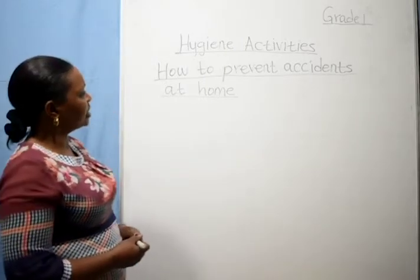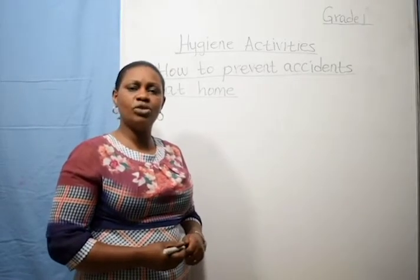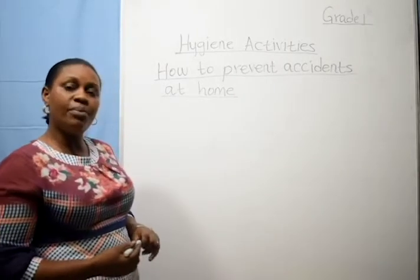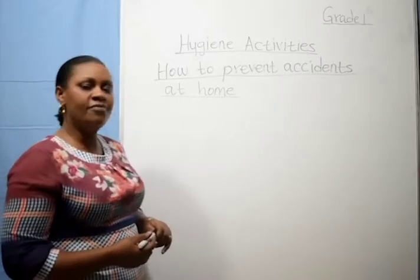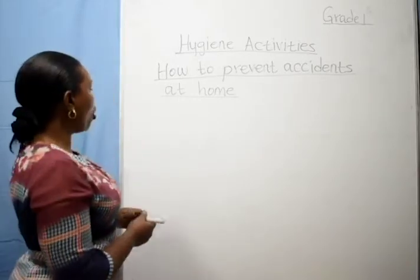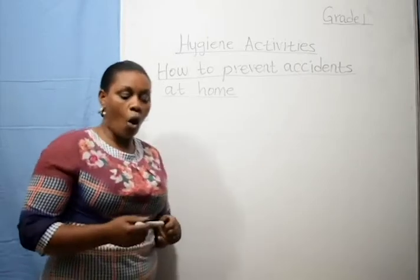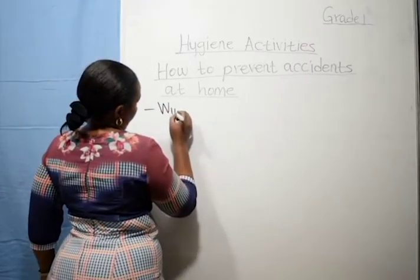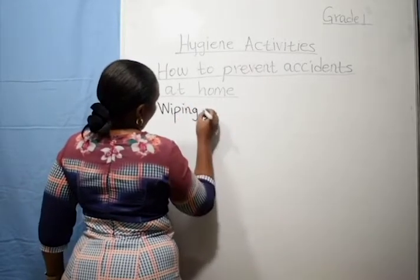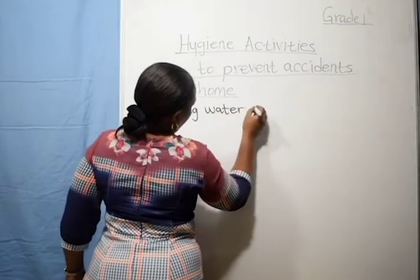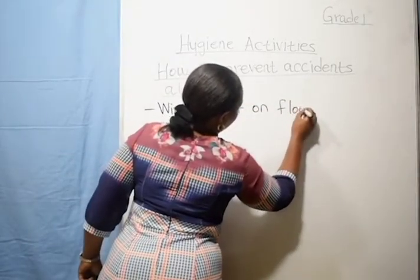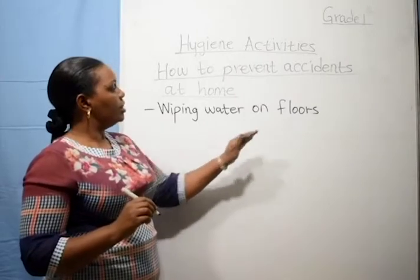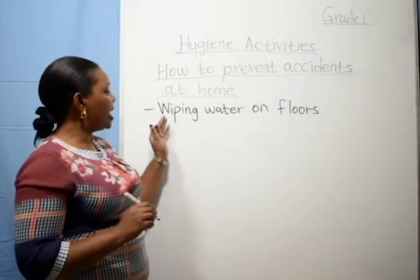How can we prevent accidents at home? The common accidents at home are: a fall, a cut, burns. We can prevent a fall by wiping water on floors. To prevent a fall, you wipe water on floors, because that water can make us slide and fall down.